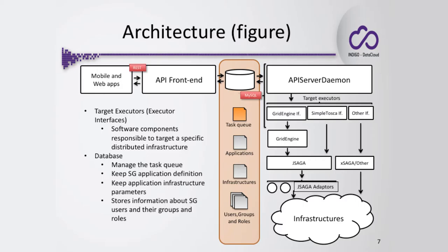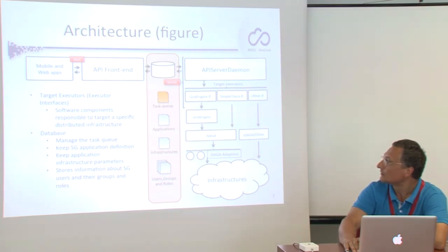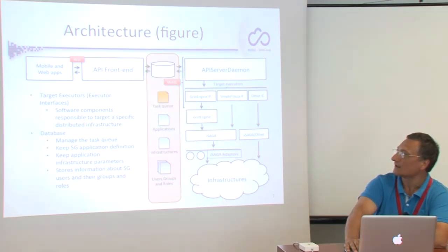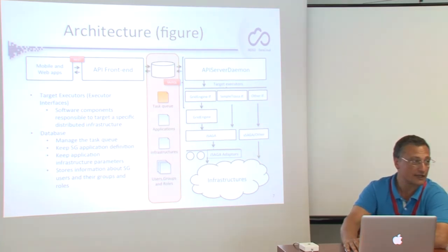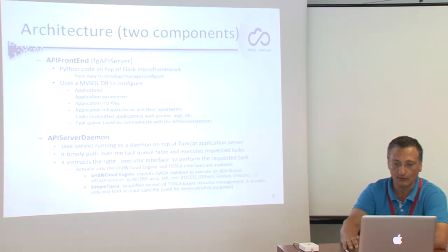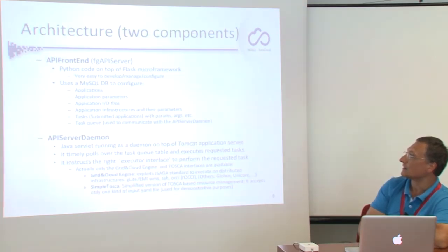With other interfaces you can target any kind of other middleware APIs. For instance, you can use Python Saga, or you can even target a command-line execution. This is totally independent from the API point of view. This highlights the flexibility of the Future Gateway compared to the previous architecture provided by the Catania Science Gateway Framework.